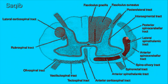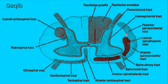This is the anterolateral system. These ascending tracts are part of the white matter, not the gray matter. This is the dorsal column medial lemniscus system, which includes fasciculus gracilis and fasciculus cuneatus. In the anterolateral system we have the anterior spinothalamic tract, the spinolivary tract, the spinotectal tract, and the lateral spinothalamic tract — together forming the spinal lemniscus. We also have the anterior and posterior spinocerebellar tracts.